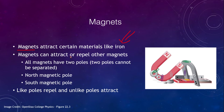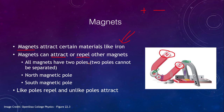Magnets themselves can attract or repel other magnets. We looked at electrical charges — positive and negative — where like charges repel and opposite charges attract. Similarly, in a magnet we have a north and a south pole. If you try to put two north poles together they will repel each other, but if you put a north and a south pole together they will attract.